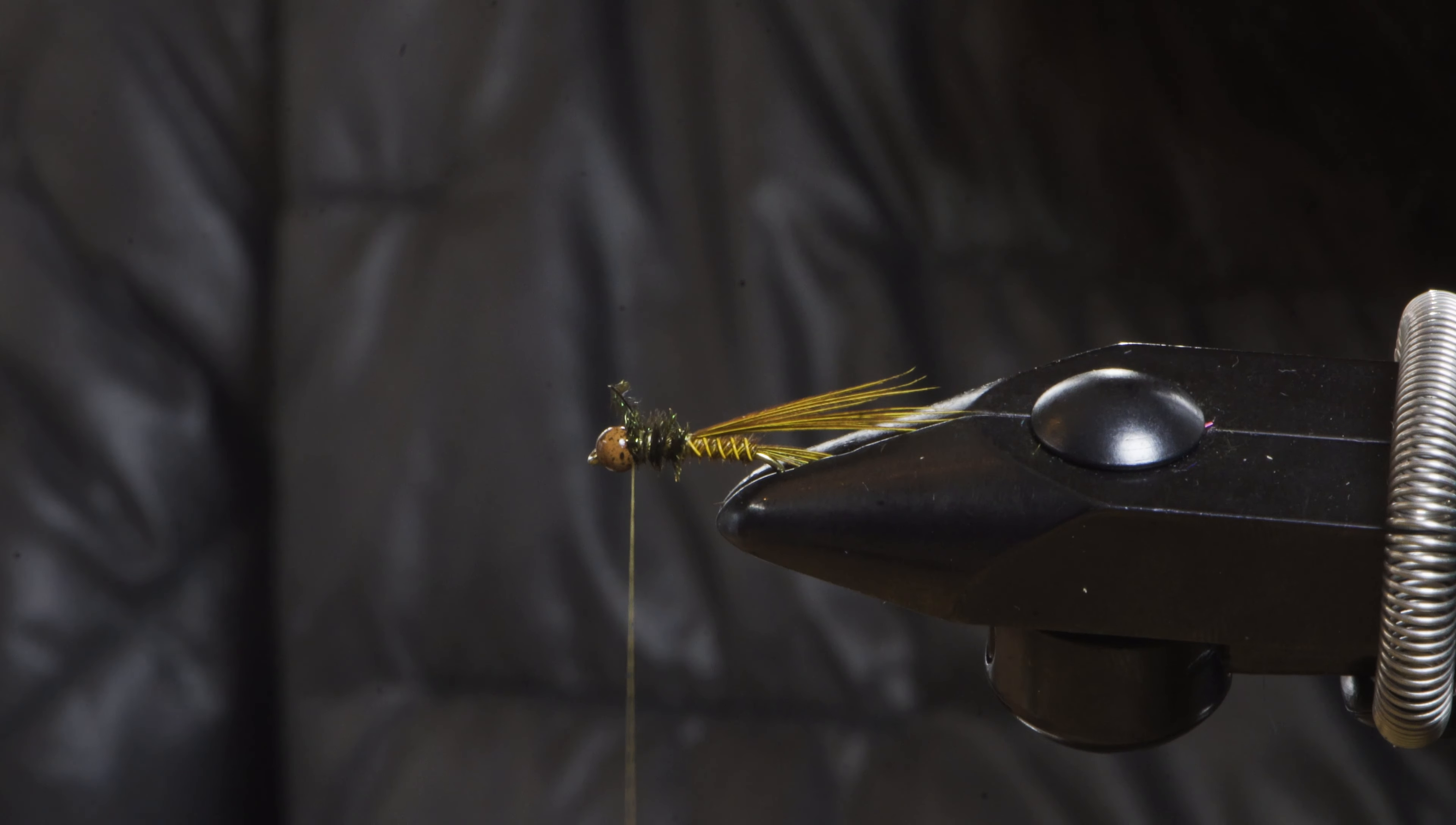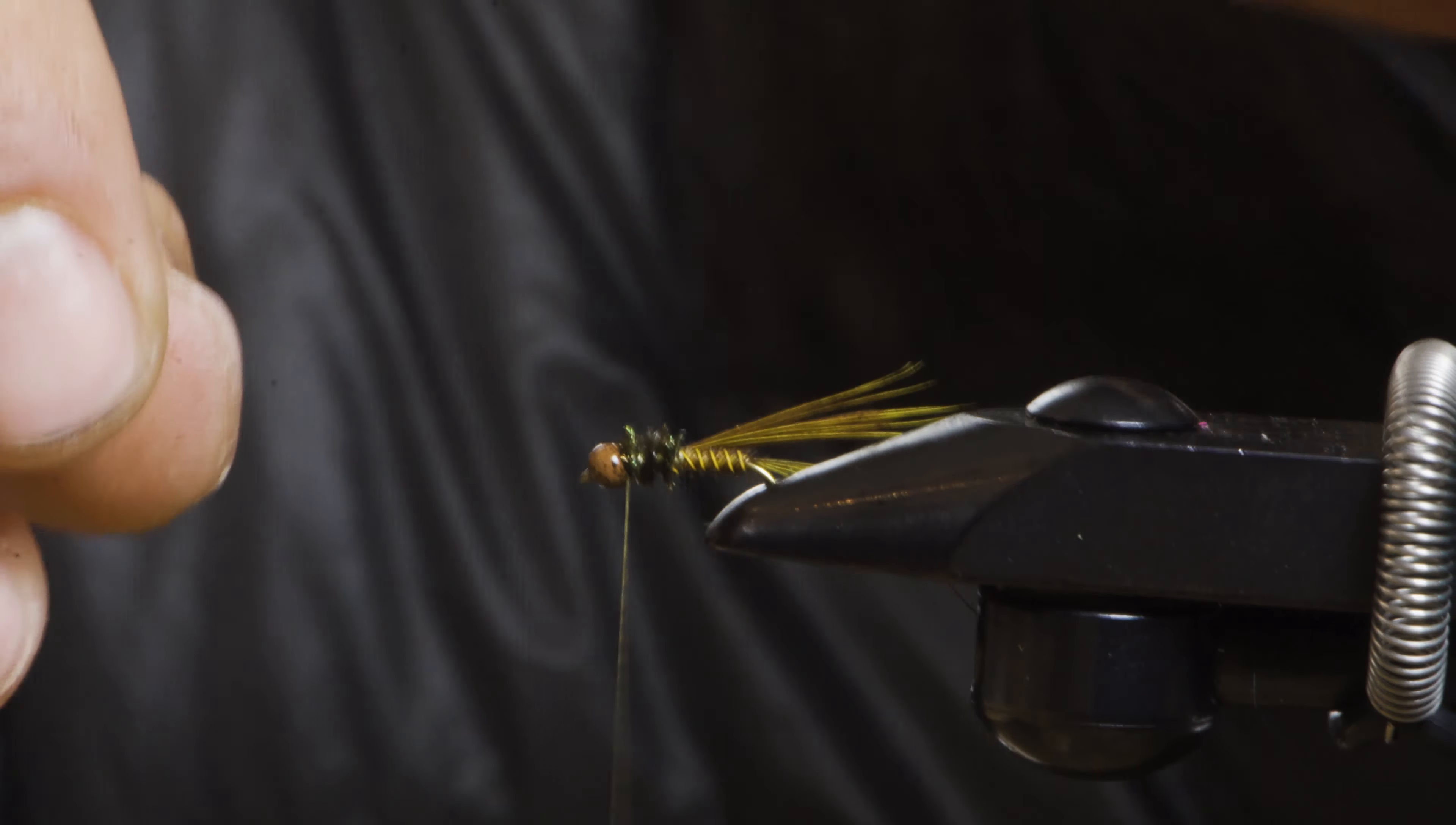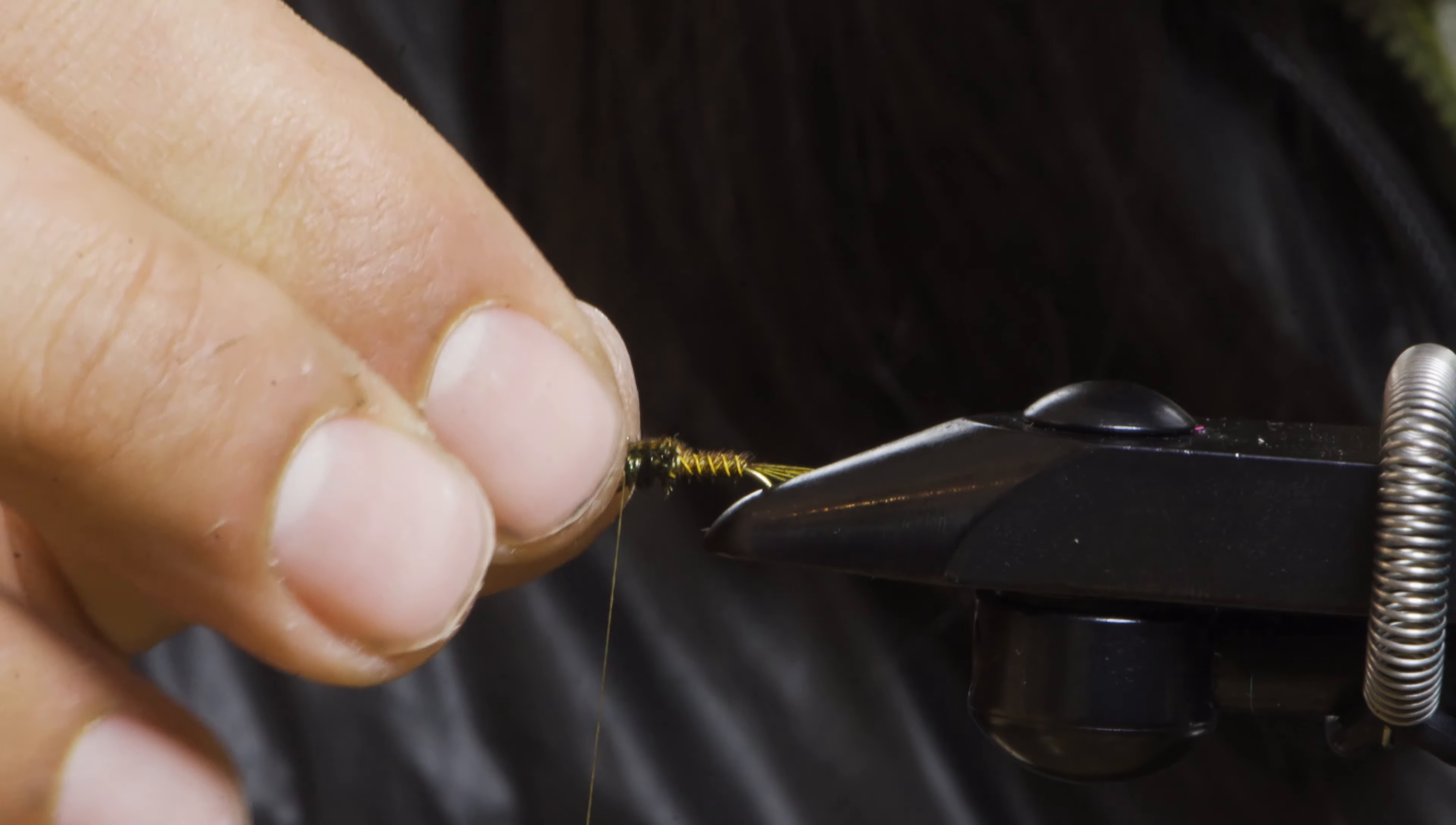I'm going to go ahead and secure again two wraps behind and a few in front as well. Usually now you can snap off your hurl. If it doesn't break perfectly, go ahead and clean it up. Now for the legs and the wing case of this fly.